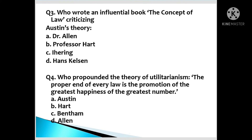Question number 3: Who wrote an influential book 'The Concept of Law' criticizing Austin's theory? A. Dr. Ellen, B. Professor Hart, C. Eyring, D. Hans Kelsen. Question number 4: Who propounded the theory of utilitarianism? 'The proper end of every law is the promotion of the greatest happiness of the greatest number.' A. Austin, B. Hart, C. Bentham, D. Helen.